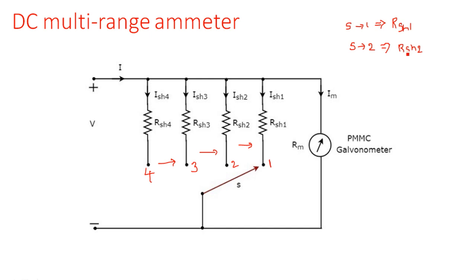When the switch is connected at the third position, Rsh3 is in the circuit and the remaining resistors are out of the circuit. When the switch is connected at the fourth position, Rsh4 is in the circuit and the remaining are eliminated. So every time the switch selects a particular position, it simply acts like a normal basic single-range DC ammeter — just one resistor in parallel with the meter. We also have another construction where all the resistors are connected in series and that series combination comes in parallel with the meter.